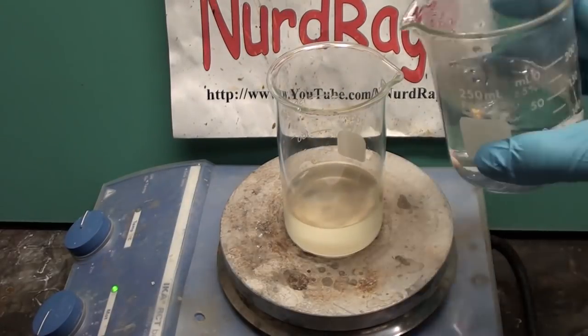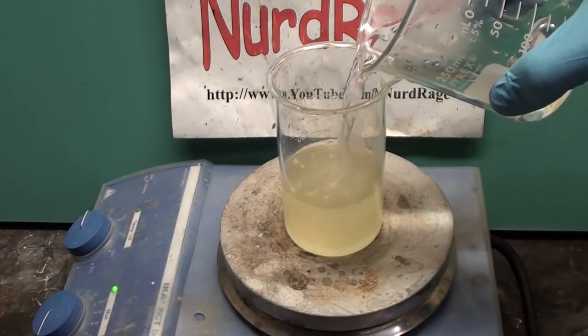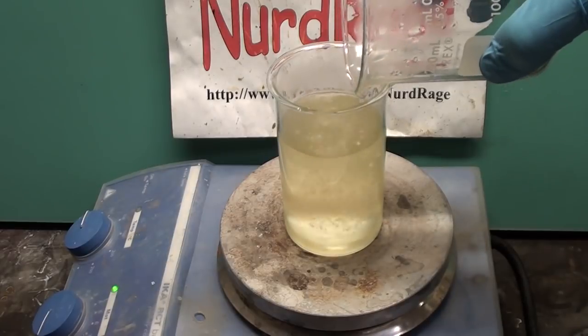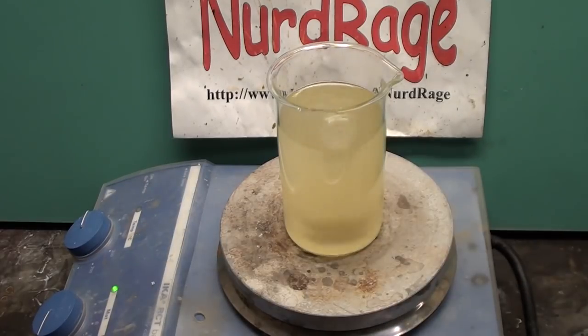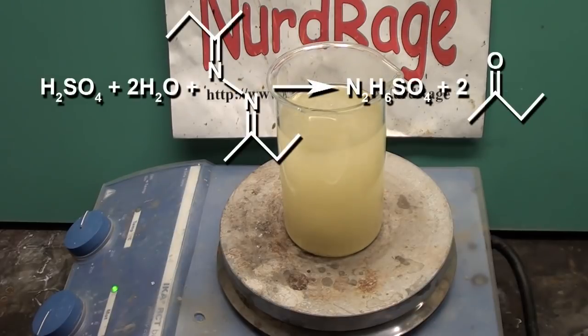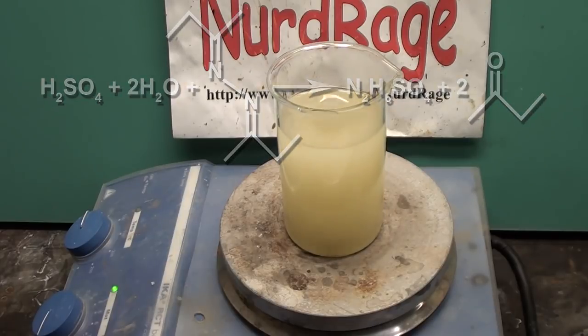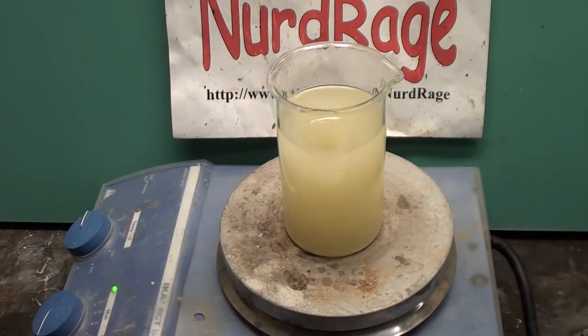Now get the methyl ethyl ketazine and pour the sulfuric acid solution directly into it while it's still hot. Stir it to dissolve the ketazine as it's very soluble and reactive with the acid. What's happening is the hot acidic solution hydrolyzes the ketazine and converts it to hydrazine sulfate and methyl ethyl ketone again. You can see the solution get cloudy. This is hydrazine sulfate crystallizing out.